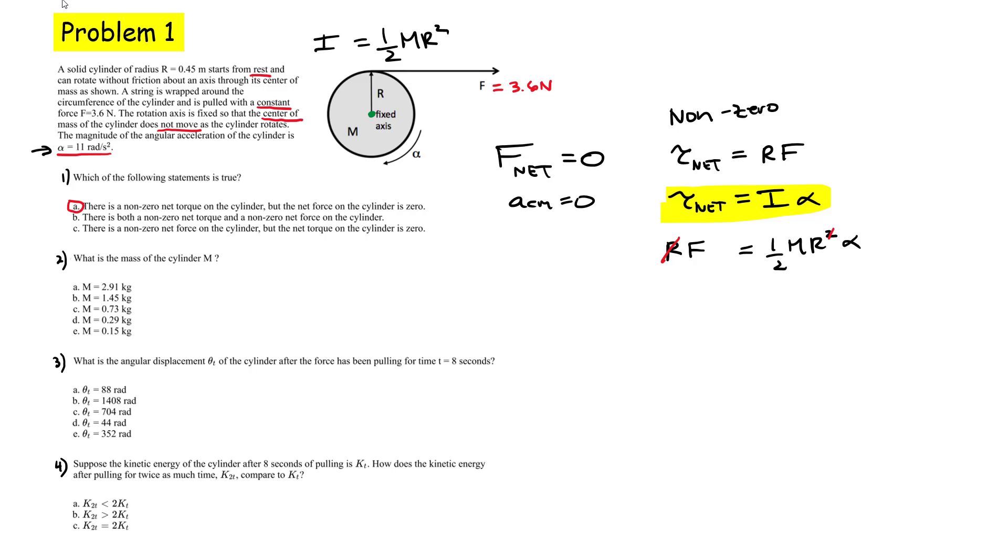Now we can simplify. We have a radius on each side that we can cancel. My goal is to isolate for the mass. So I have M = 2F/(R α). So then I get two, substitute the numbers, 3.6. The radius is 0.45 meters. And my angular acceleration is alpha. If I do all that, I get 1.45 kilograms. So our best choice here has to be choice B.